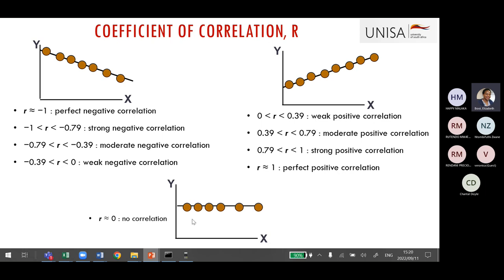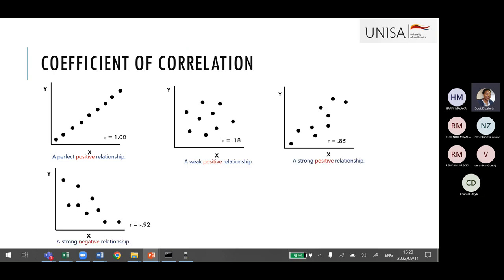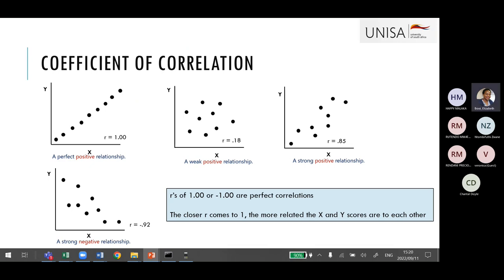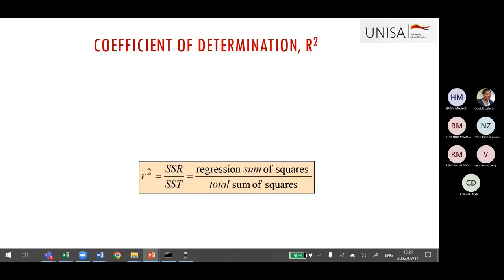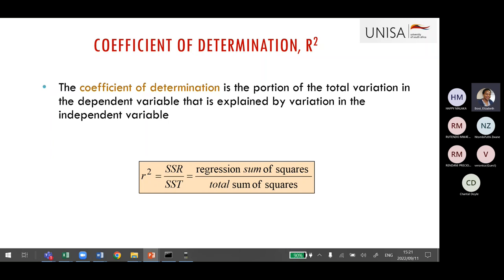If R equals zero, there is no correlation between X and Y. You can use the scatter plot and the R value to state what the relationship is between those X and Y variables. Apart from the coefficient of correlation, which tells you about the strength and direction of the relationship between two numerical values, we also have what we call the coefficient of determination. Later on, we are going to calculate a regression line.